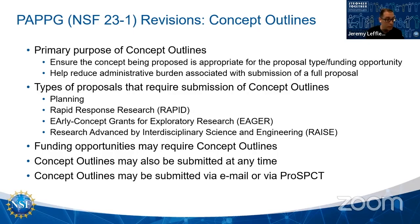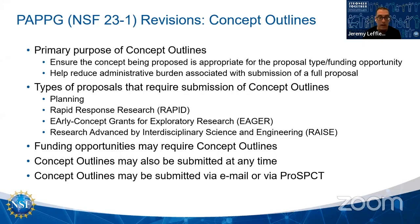For these types of proposals — planning, rapid, EAGER, and RAISE — the PI takes that email and includes it as part of their proposal in the section in research.gov called the program officer concurrence email. It is uploaded and it is required, and the proposal cannot be submitted without such a concurrence letter.